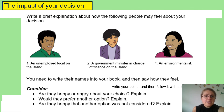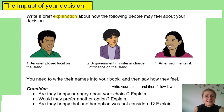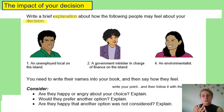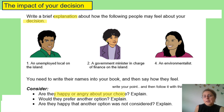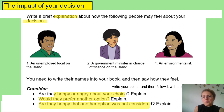Write a brief explanation — and explanation comes from the word 'explain', so you don't just write your points. You need to explain and use language like 'this is because'. Write about how the following people may feel about your decision. I chose option two, the small ecotourist resort, which has jobs available for locals. Consider: is the stakeholder going to be happy or angry with your choice? Would they have preferred another option? Are they happy that another option was not considered?